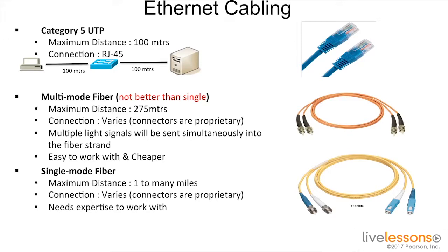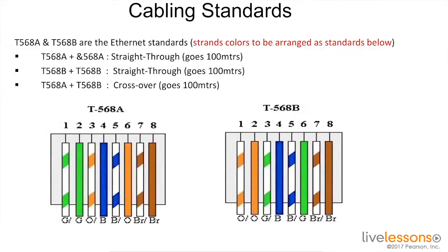Fiber often has greater maximum distances, but is more expensive to work with than Ethernet. There are two types of fiber. One is multi-mode fiber, which is not necessarily better than single-mode fiber, but is less expensive than single-mode fiber and does not carry the signal as far a distance. The other type of fiber is single-mode fiber, which can extend great distances, but it needs specific expertise to work with and is more expensive to implement.